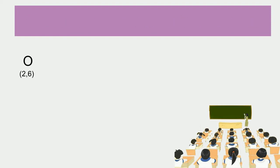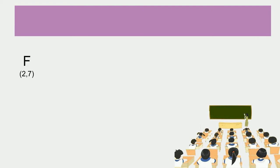If we talk about oxygen, it has atomic number 8 and electronic configuration 2, 6. To complete its octet, it will gain 2 electrons, and after gaining 2 electrons, it will acquire 2 units negative charge. Fluorine, which has atomic number 9 and electronic configuration 2, 7, will gain 1 electron to complete its octet. Therefore, it will acquire 1 unit negative charge.